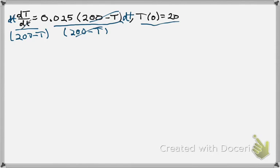It cancels out on the left-hand side. So we have dT over 200 minus capital T, and that's equal to 0.025 dt. So now what we need to do is take the anti-derivative of both sides, once we get the variables separated.